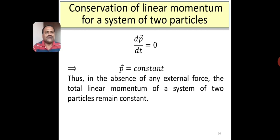For a system of two particles, the total momentum remains constant if there is no external force acting on it. I hope you understood the concept of linear momentum, the conservation of linear momentum, and the conservation of linear momentum in the case of a system of two particles.